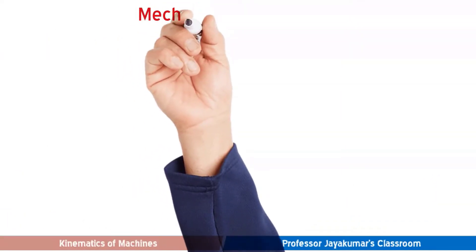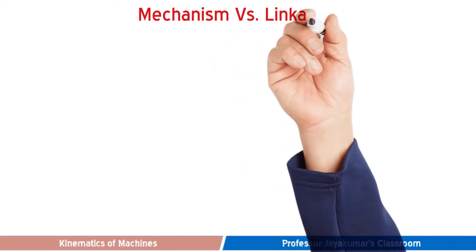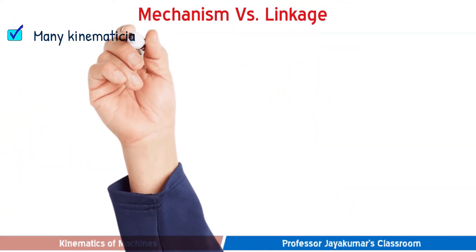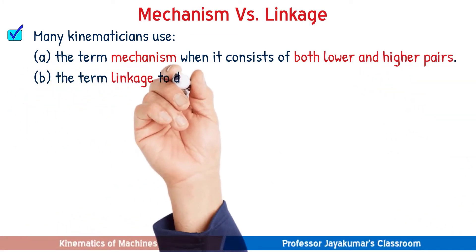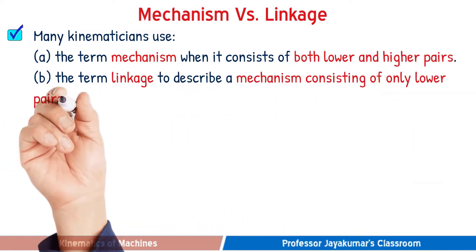In the literature, many kinematicians use the terms mechanisms and linkages. They use the term mechanism when it consists of both lower and higher pairs. They use the term linkage in order to describe a mechanism consisting of only lower pairs.